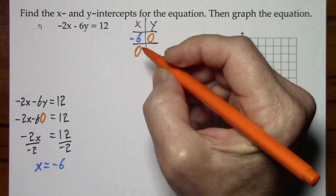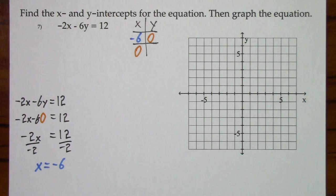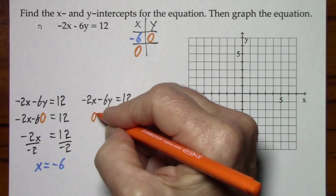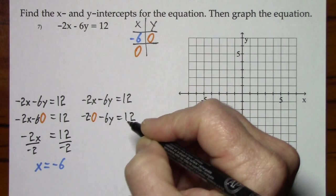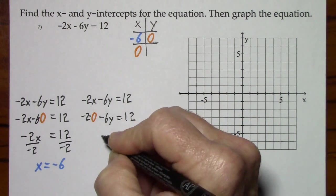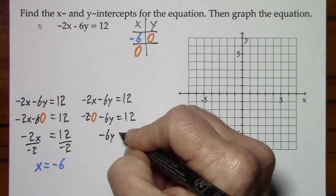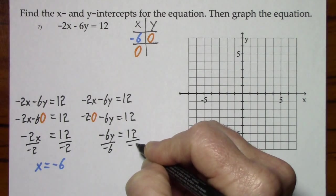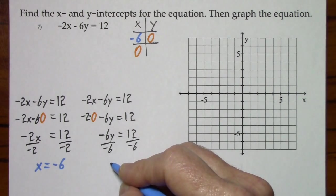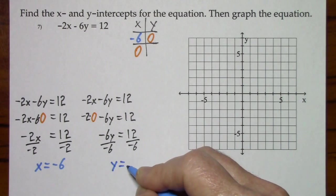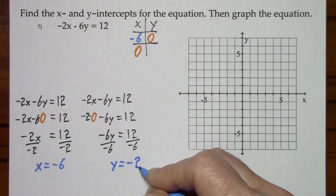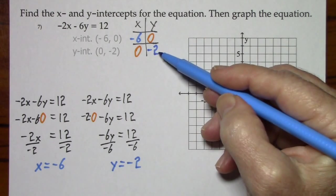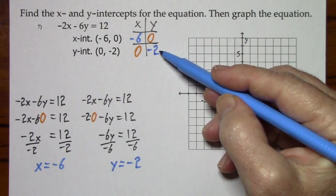Now when x is 0, we'll find the y-intercept. We'll put this in our chart. So we have the intercepts. We can go ahead and graph these.